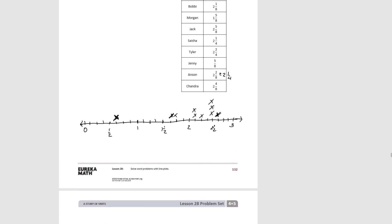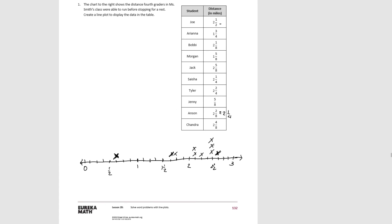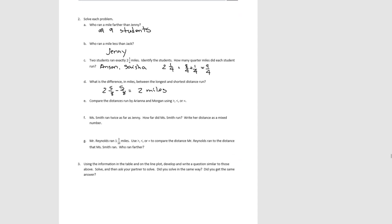Compare the distances run by Arianna and Morgan using greater than, less than, or equal to. Arianna was 1 and 3 fourths, and Morgan was 1 and 5 eighths. These have related denominators, so we can make them both eighths by multiplying by 2. That gives us 1 and 6 eighths for Arianna, so 1 and 6 eighths is greater than 1 and 5 eighths.